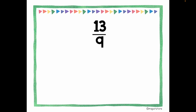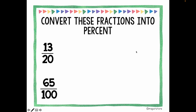Pause the video and try this one yourself. Thirteen divided by nine equals 1.4̄ — the four repeats. Now I shift my decimal point two spaces to the right: one and two. That gives 144.4̄ percent, with bar notation, since the four keeps repeating. Pause the video and try to convert these fractions to percent. Thirteen divided by twenty equals 0.65. Shifting the decimal point two spaces to the right gives 65 percent.